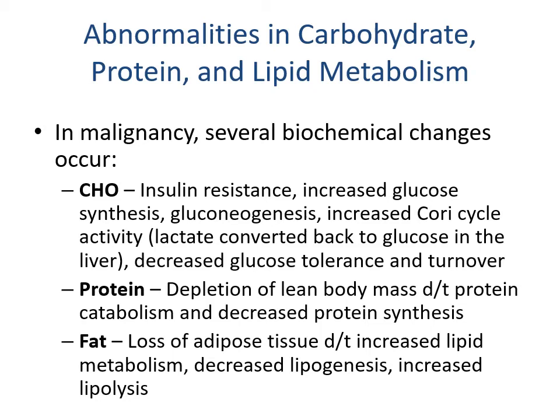Macronutrient metabolism in cancer resembles the stress state. With carbohydrates, there is insulin resistance, increased gluconeogenesis, increased Cori cycle activity with lactate converted back to glucose in the liver, and decreased glucose tolerance and turnover. With protein, there is depletion of lean body mass due to protein breakdown and decreased protein synthesis. With fat, there is loss of adipose tissue with increased lipid metabolism, decreased lipogenesis, and increased lipolysis.